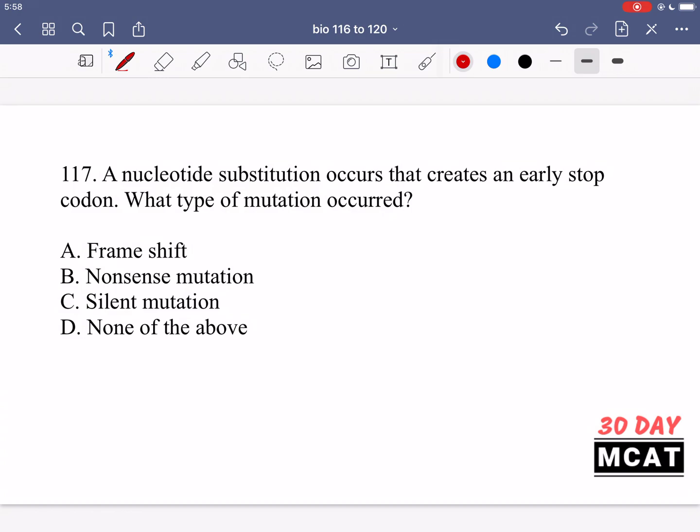In question 117, it says a nucleotide substitution occurs that creates an early stop codon. What type of mutation occurred? Is it a frameshift mutation? No, that's not correct. This is when you either add a nucleotide or take one away, insertion or deletion of a nucleotide. What that does is it shifts the frame. Normally we read in mRNA three nucleotides at a time, and that corresponds to one codon which is converted into an amino acid. But if we insert another nucleotide, that shifts the frame that we're reading. This shift in the frame keeps traveling forward from the point at which we had an insertion or deletion.